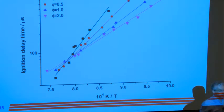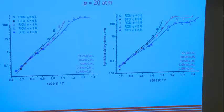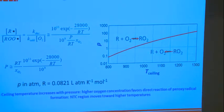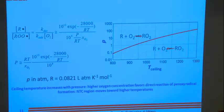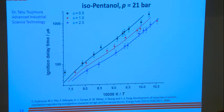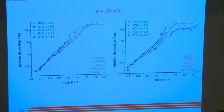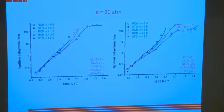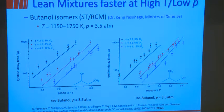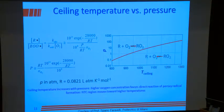So why is that happening? I want to try and explain that as best I can. This goes back to the concept of ceiling temperature. Depending on the pressure — at this condition it's 30 atmospheres — this turnover is occurring at 1300 Kelvin, which is the ceiling temperature. Below that ceiling temperature, we're still getting some RO2.